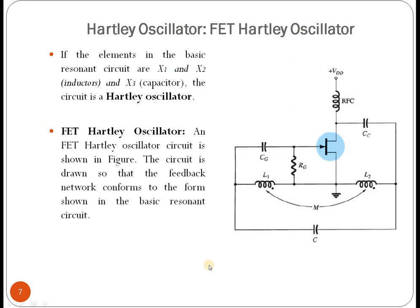Now, another type of oscillator is the Hartley oscillator. As already noted, if the basic resonant elements x1 and x2 are inductors and x3 is a capacitor, the circuit is called a Hartley oscillator. Here, the FET Hartley oscillator circuit is shown, using a FET in the middle. The basic resonant elements are inductors L1 and L2 for x1 and x2, and one capacitor for x3. The remaining capacitors and resistors are used for biasing, with VDD as the supply voltage.